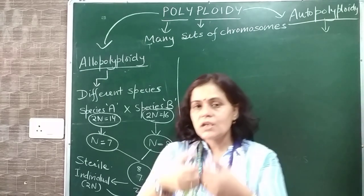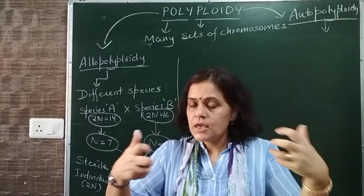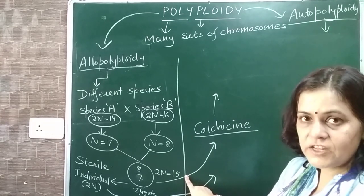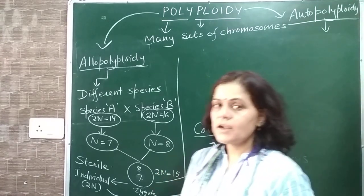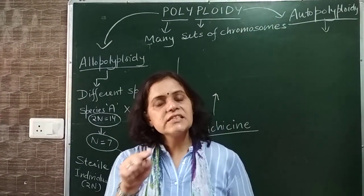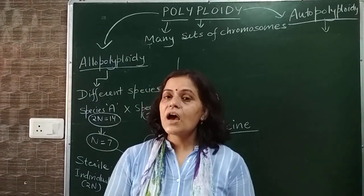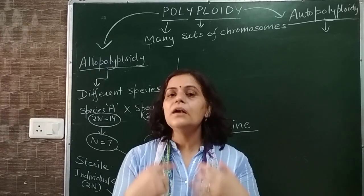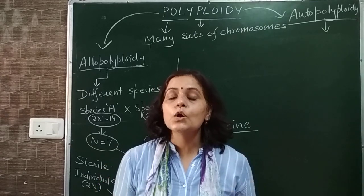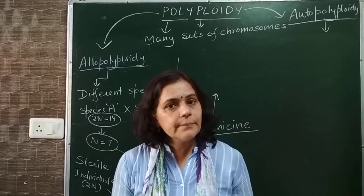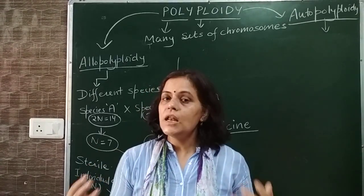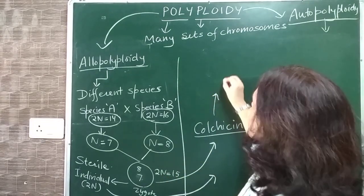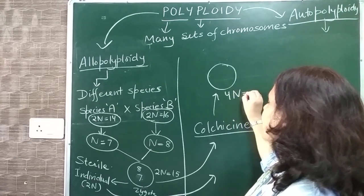If spindle fibres are not formed, then mitosis cannot proceed normally. In anaphase, the chromosomes cannot be pulled to opposite poles. But remember - before mitosis, during interphase S phase, DNA replication already occurred, so chromosomes already doubled. However, because spindle fibres are not formed, the doubled chromosomes are not moved to opposite poles - they remain in the same cell. So before the cell divides, the chromosome number has already become 30, and we have 4N equal to 30.